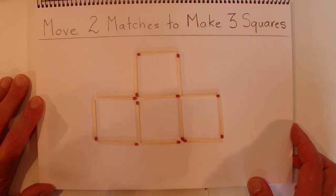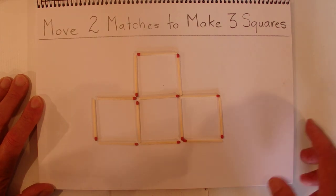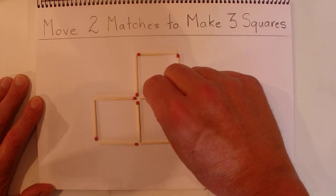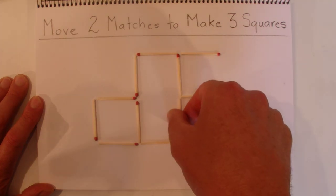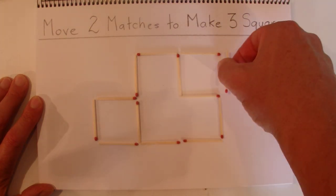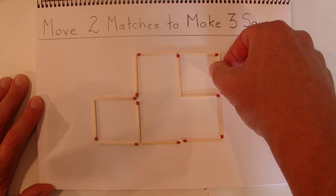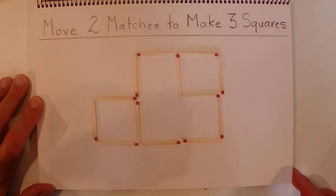Otherwise I'm going to go straight into the answer. The answer is to pick up that match and move it up the top. The second match is that one there, and move that up the top there. That's created three squares.